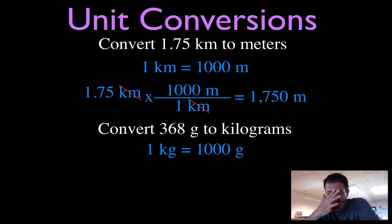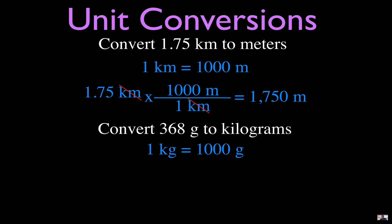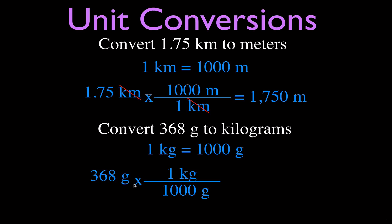Next, convert 368 grams to kilograms. Write down the conversion factor: one kilogram equals one thousand grams. Write down what you're given with your multiplication and fraction signs. Grams goes on the bottom, one kilogram on top. So 368 times one divided by one thousand equals 0.368 kilograms. The grams cancel, and that's our answer.